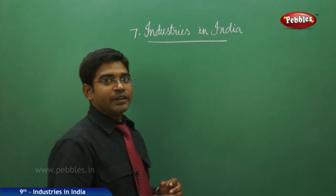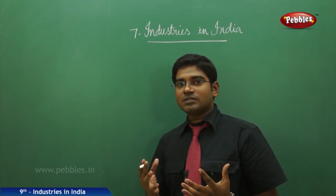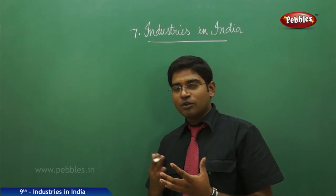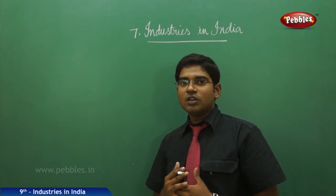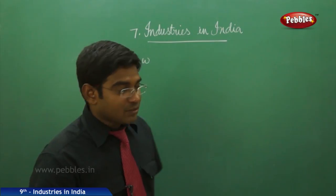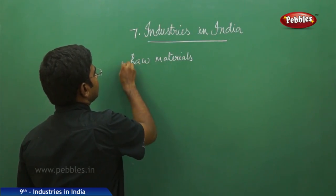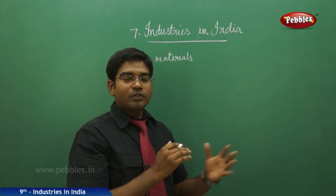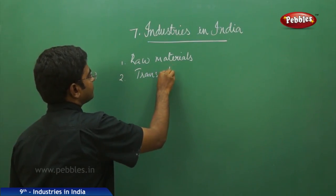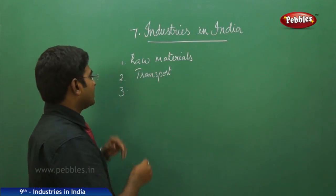Today's topic is industries in India. An industry is a place where raw materials are converted into useful, necessary products. To convert raw materials into useful products, we first need to identify what the raw materials are. Then, after the raw materials are identified, they have to be carried to the place where the industry is set up — so we need transport. After taking them to the required place, we need machinery.